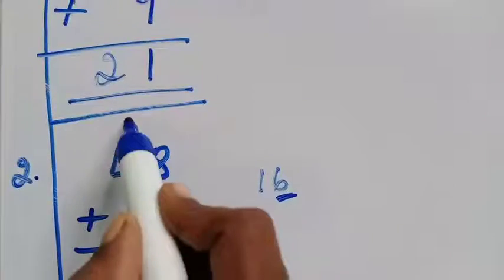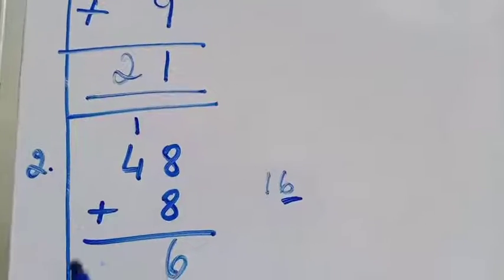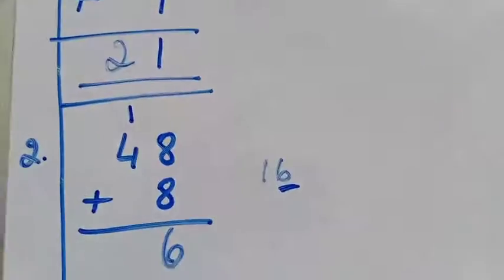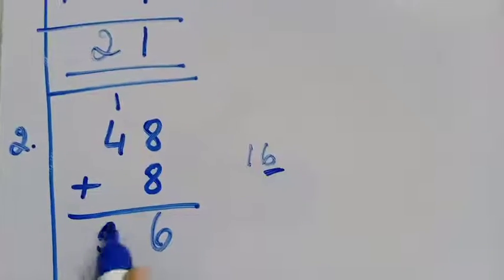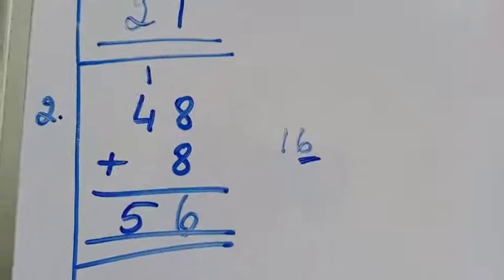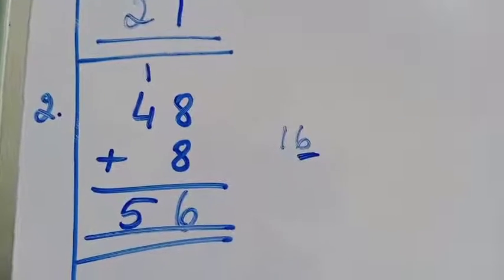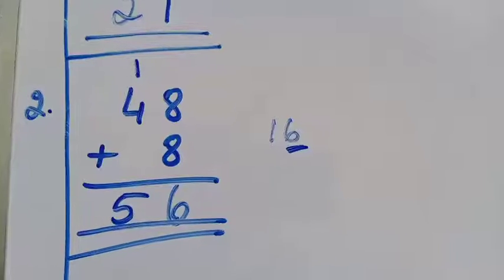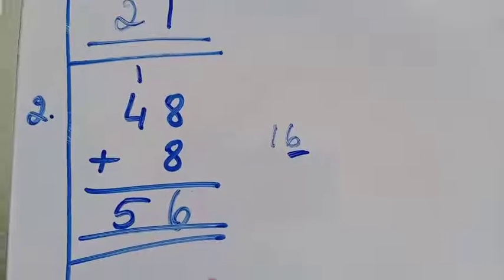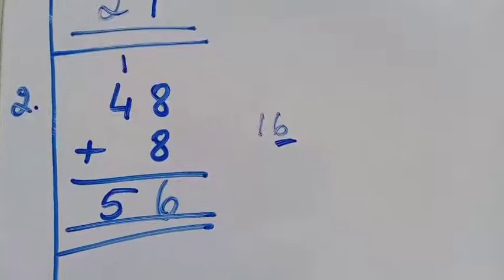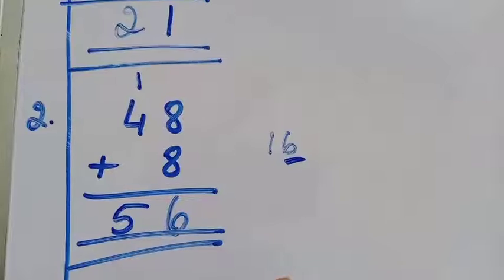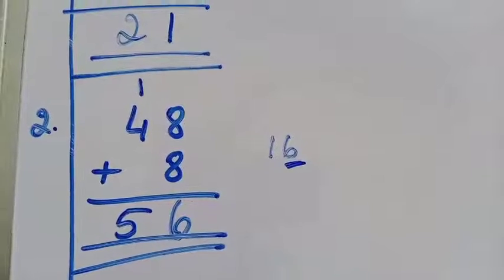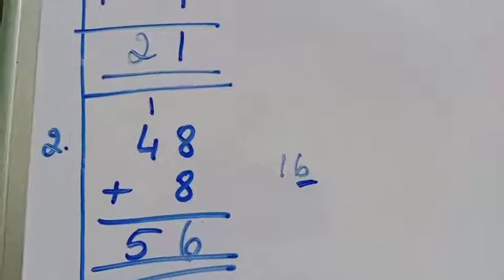Now 4 plus 1 is how much, children? 5. So how many ice creams did they buy? Total 56 ice creams — they bought 56 ice creams altogether.